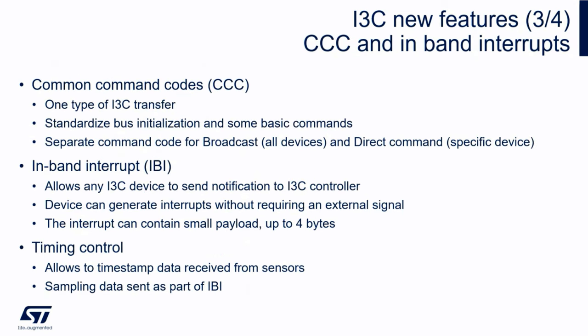I3C also introduces common command codes — standardized commands with a described format that allow common operations in a standard way, so you don't need to study the sensor datasheet for basic tasks. There are also in-band interrupts, which allow any I3C target to initiate communication on the bus and send a notification to the I3C controller. This is one reason we have the arbitration header — multiple devices can start communication at the same time, and dynamic addressing configures priority between devices.